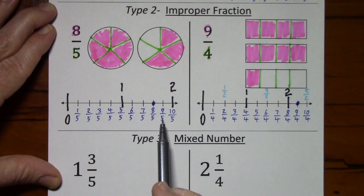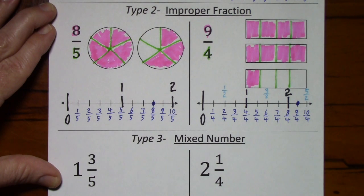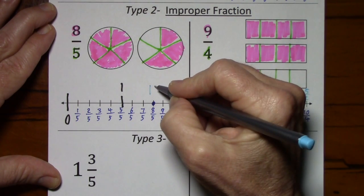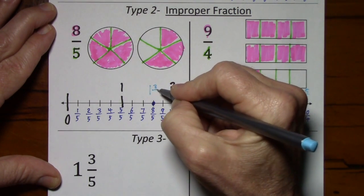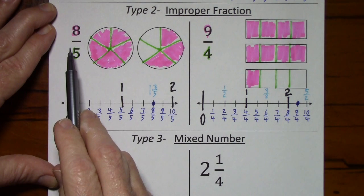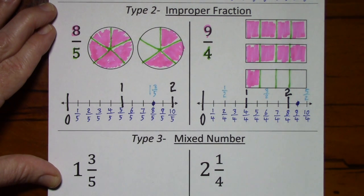Each of these improper fractions could be represented as a mixed number. I'm going to pick eight-fifths, because it's the same as one and three-fifths. Eight divided by five is one, with three left over, and you keep your denominator. So one and three-fifths is just another way of writing eight-fifths — they occupy the same place on the number line. With the circles, we shaded in one and three-fifths circles.